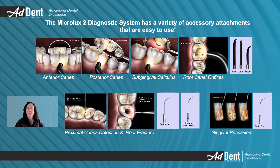The Microlux2 Diagnostic System has a variety of accessory attachments that are easy to use. Any of the three glass light guides can be used in procedures to visualize anterior and posterior caries, calculus, and root canal orifices. The shorter PETA light guide is designed for a child's smaller mouth.